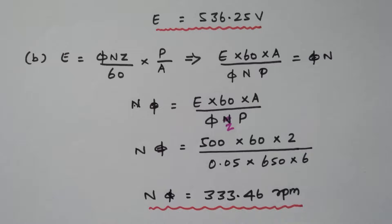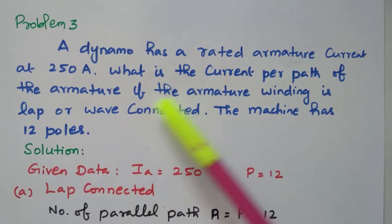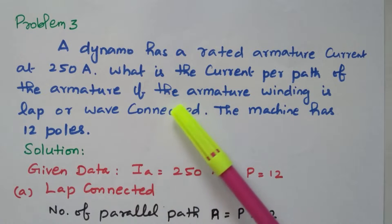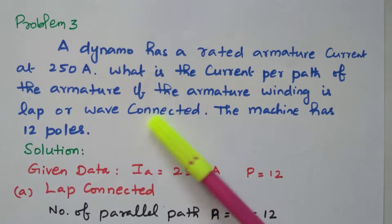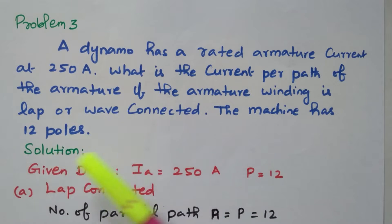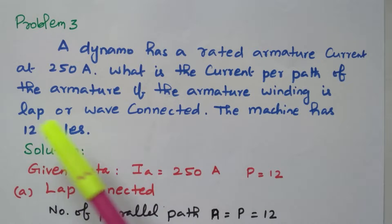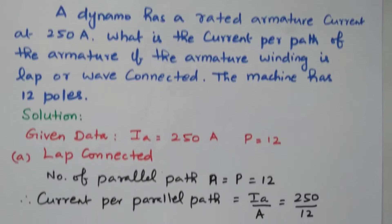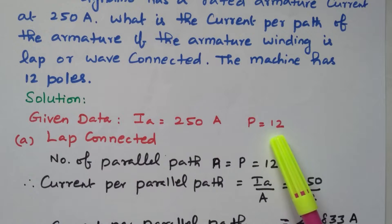Now we will go to the third problem. A dynamo has a rated armature current of 250 amperes. What is the current per path of the armature if the winding is lap or wave connected? The machine has 12 poles. The armature current is 250 amperes and number of poles equals 12. We need to find the current per path for both connection types.